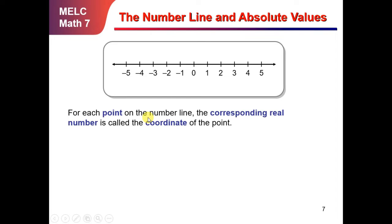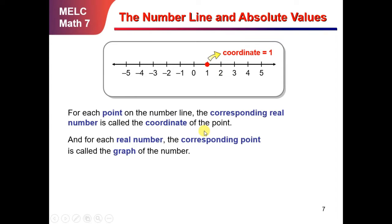Let's consider this diagram. For each point on the number line, the corresponding real number is called the coordinate of the point. As you can see, 1 with a point on the number line is considered to be the coordinate of point 1. And for each real number, the corresponding point is called the graph of the number. The blue point shown is known as the graph of negative 4. So in this diagram, we have the graph of negative 4 and the graph of positive 1, or we can also name these as the coordinates of positive 1 and negative 4.